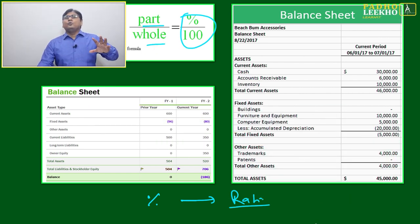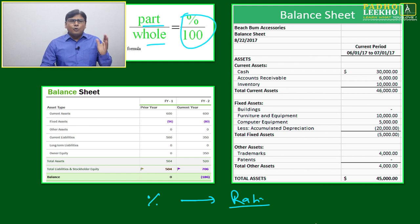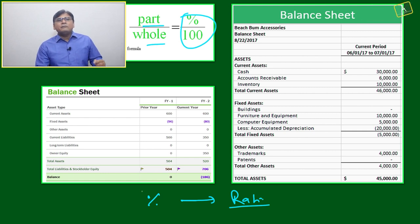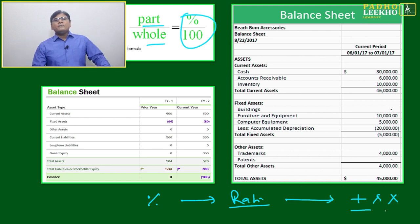Then all chartered accountants and whatever they are studied, or ICWA—all those from commerce background—you can realize their full career is dedicated to understand these two tools in different formats: percentage and ratio in different formats. Both are derived from addition and multiplication.